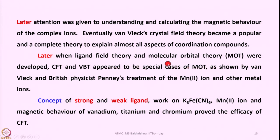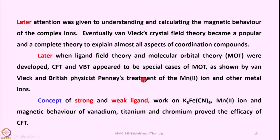Crystal field theory and valence bond theory almost appear to be special cases of molecular orbital theory. Molecular orbital theory takes the best parts of both crystal field theory and valence bond theory. This modified molecular orbital theory is more or less the same as ligand field theory, as shown by Van Vleck and British physicist Penney, who worked on the magnetic properties of manganese ion and several other metal ions.